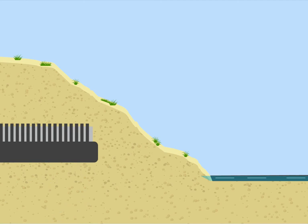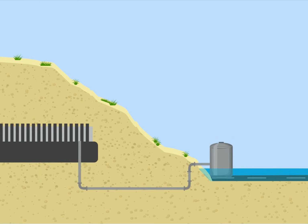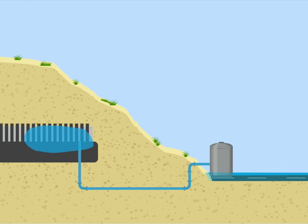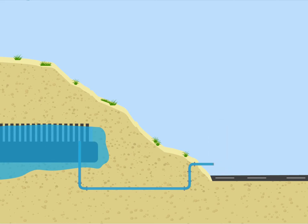Rainfall overflow can either flow via gravity or be pumped into open-bottom chambers located beneath the dunes. From this point, the stormwater infiltrates into the sand and strips the pollutants and pathogens using sorption and bacterial desiccation. The filtered groundwater then migrates to the ocean, flowing underneath the sand dunes and beach sand.